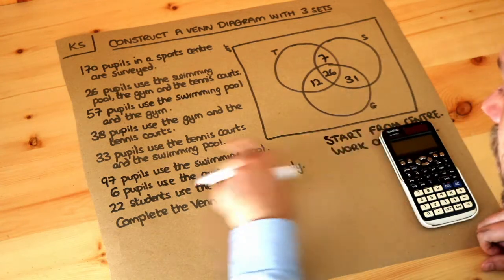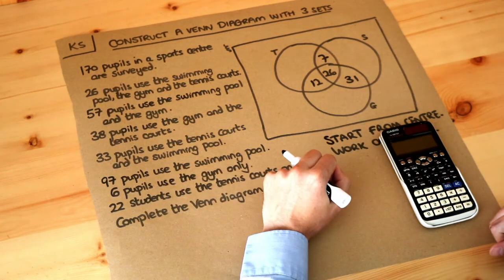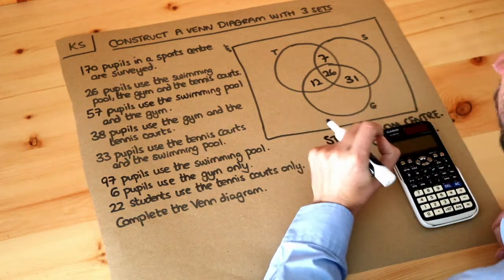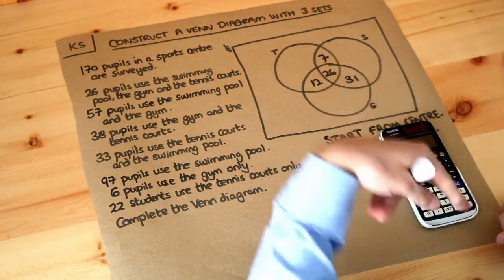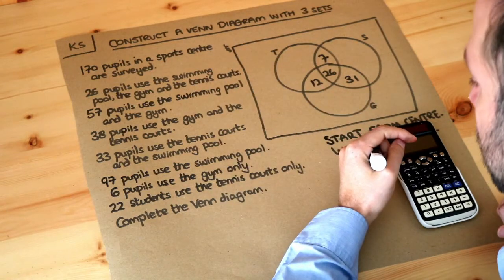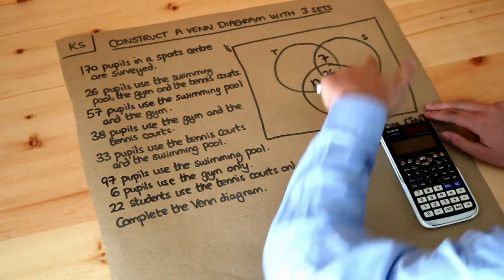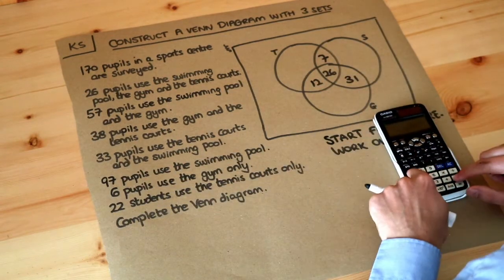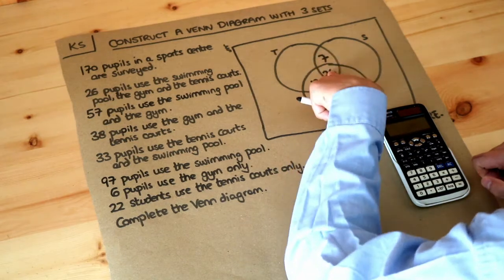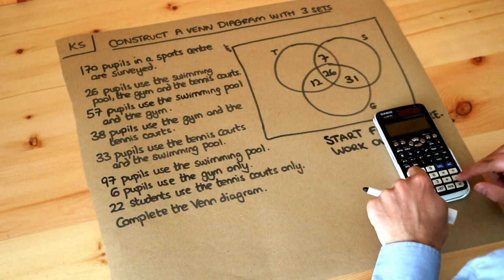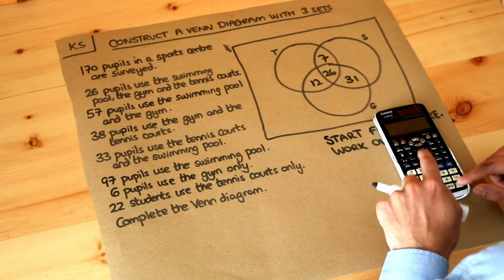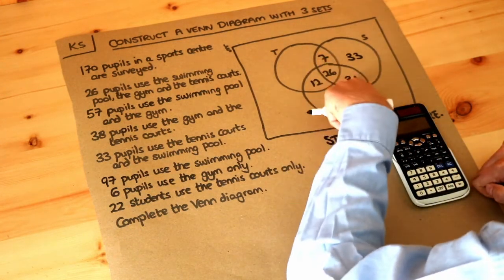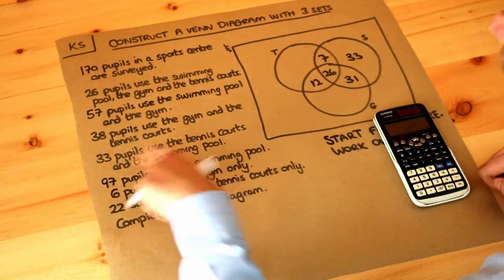We're told that 97 pupils use the swimming pool in total — not just those who only use it, but all students who use it possibly with other facilities too. So the total of all numbers in the S circle must add up to 97. We do 97 minus 7, minus 26, minus 31, which gives us 33 students who only use the swimming pool. All four numbers in the S circle now add up to 97.